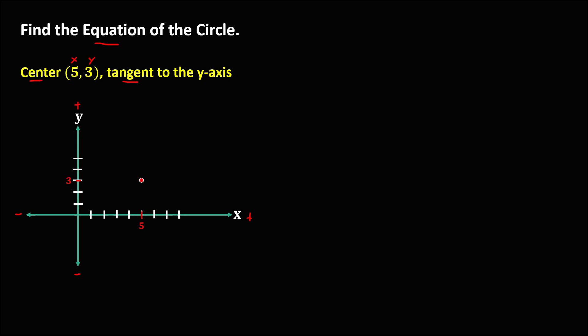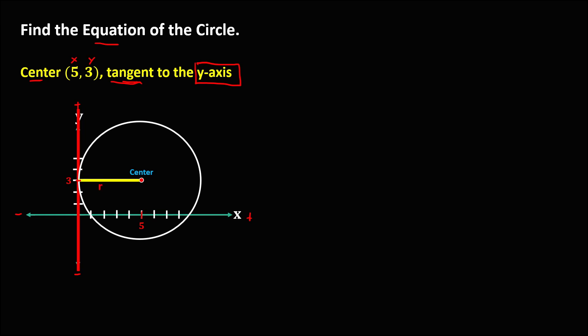This is the point of the center. Since we have this tangent to the y-axis, and this is the y-axis, the circle touches this line. To find the radius, take note that the radius goes from the center to the tangent line. Using the counting method from the tangent line to the center, we count 1, 2, 3, 4, 5, so the radius is equal to 5.